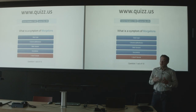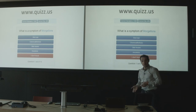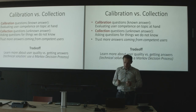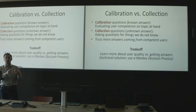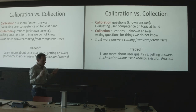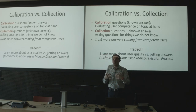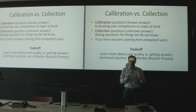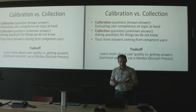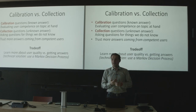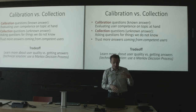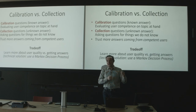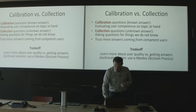The basic idea is very reCAPTCHA-like. For some questions we know the correct answer — these calibration questions let us estimate how well a particular user knows a topic. Then we give collection questions for which we don't know the answer, trusting more the answers from competent users. The tradeoff: I can ask many calibration questions to estimate user quality well, but then I don't get work done — or I ask many collection questions but don't know user quality. We need to balance the two.